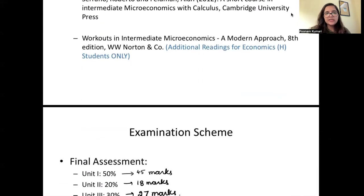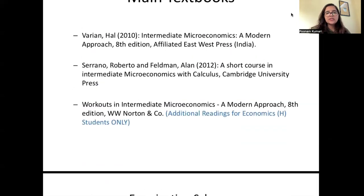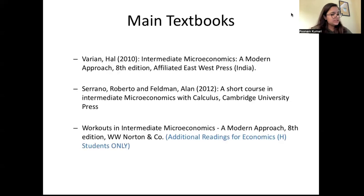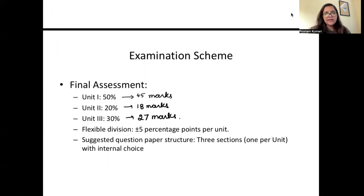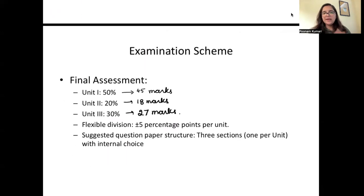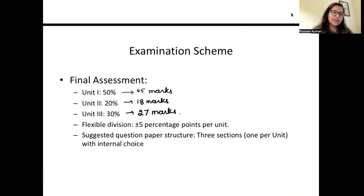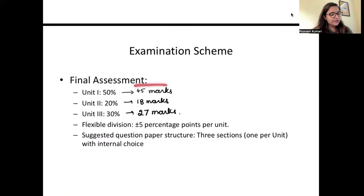So these are your textbooks and three units: consumer behavior, uncertainty, and producer behavior. All three courses share the exact same syllabus, with an additional practice book — 'Workouts in Intermediate Microeconomics' — for honor students only. Moving on to the examination scheme: unit one has a weightage of 50%, unit two has 20%, and unit three has 30%. The total exam is for 90 marks.